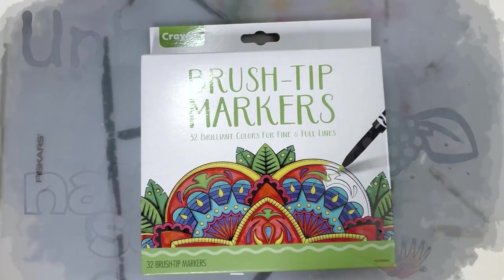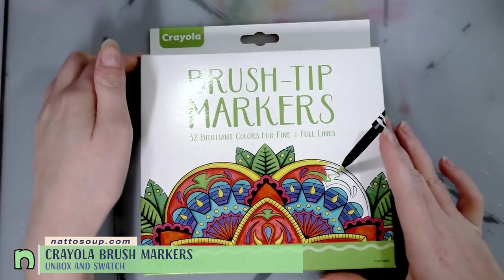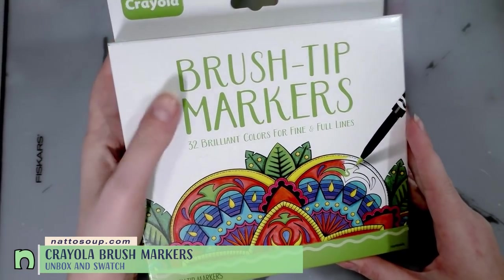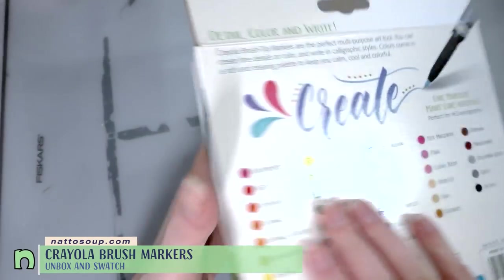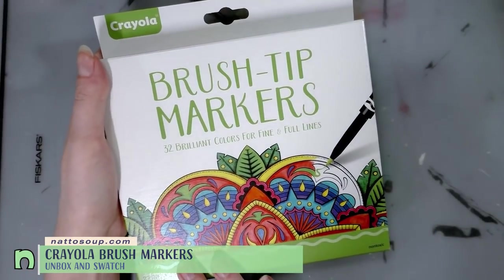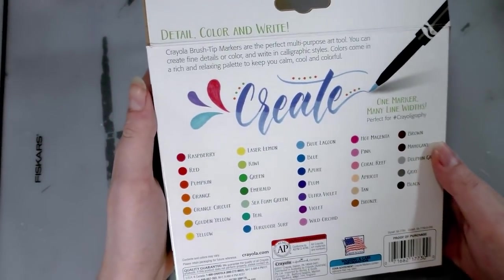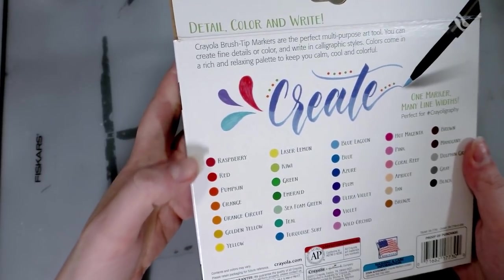Hey art nerds, today we continue to make our way through Crayola's brush tip offerings. These are the Crayola brush tip markers. I believe I got these off of Amazon. I couldn't find them in stores anymore. There are 32 brilliant colors for fine and full lines. I believe these are single tip markers.